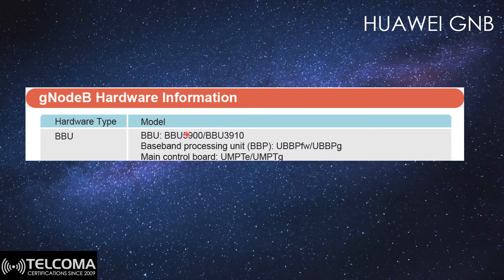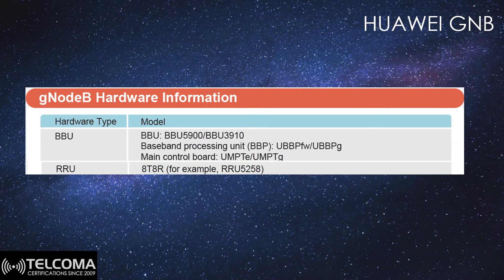Nokia has one unified name — Nokia Air Scale ABIL and ACIK — while Huawei has many things: BBU 5900, BBU 3910, BBU 5910, and in the baseband board you have UBBFW, UBBPG, UBBG, and many transmission ports. This is the similarity with the Nokia Air Scale system when it comes to the baseband unit. For the RRU, you can have 8T8R units; for example, the RRU 5258 can work on the 5G system, similar to the RRH used in Nokia.